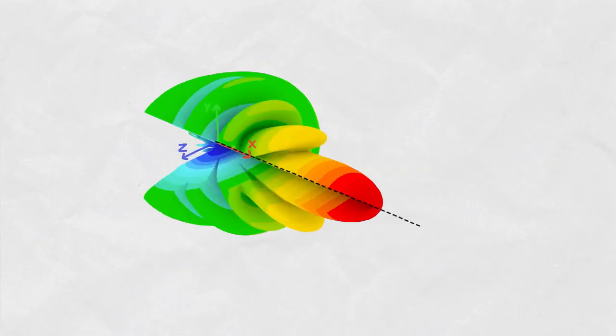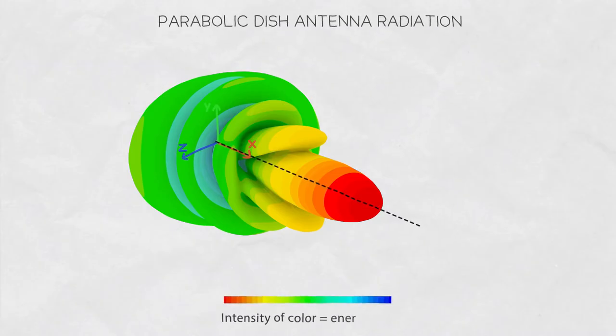So this is the visualization of the radiation of an antenna. In this example we picked a parabolic dish antenna. The intensity of the color corresponds to the energy level.